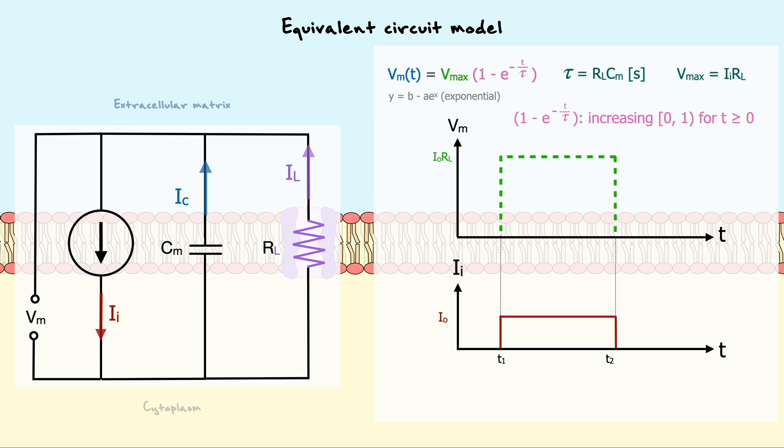Now, for the actual membrane potential, at time T1, we can consider it as T equals 0 with respect to the current injection. By plugging 0 in the membrane potential equation, the pink term becomes 0 and so does the membrane potential. Now, as time goes by, the pink term progressively increases and a larger and larger portion of Vmax is attained up until Vm pretty much equals Vmax at T2.